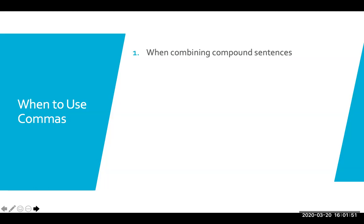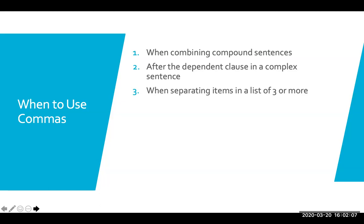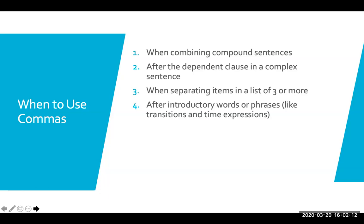You should use a comma when you are combining compound sentences. You should also use a comma after the dependent clause in a complex sentence. We're going to add commas when we're separating items in a list of three or more. Add a comma after introductory words or phrases like transitions and time expressions.